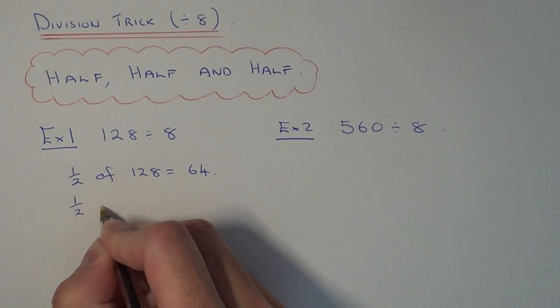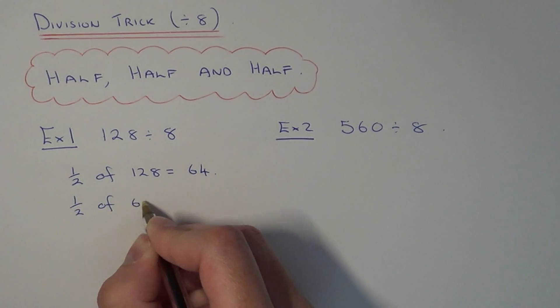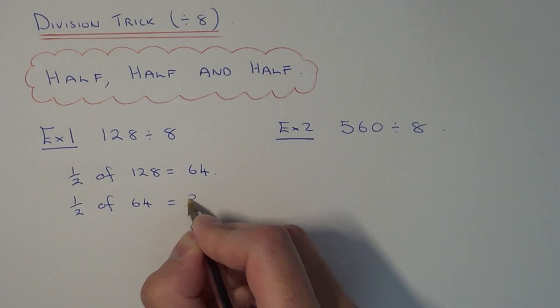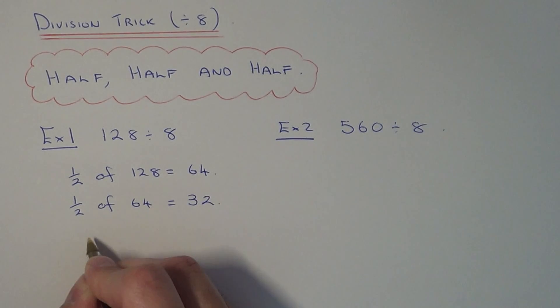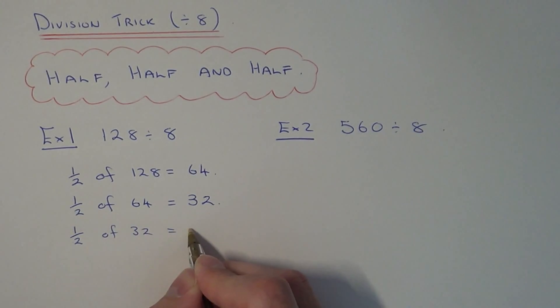We then half this answer, so we do half of 64 which is 32, and then we do one final halving. Half of 32 gives a final answer of 16.